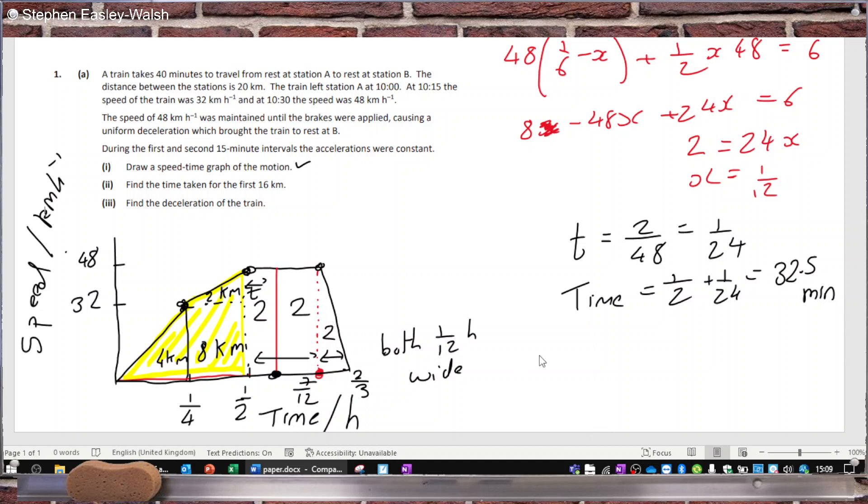And then lastly, the deceleration. No need to put the minus in because they said deceleration. It'll be rise over run. So that's 48 over—and remember this is a twelfth, a 24th and a 24th of an hour. So 48 over a twelfth, which is 576 kilometers per hour squared.